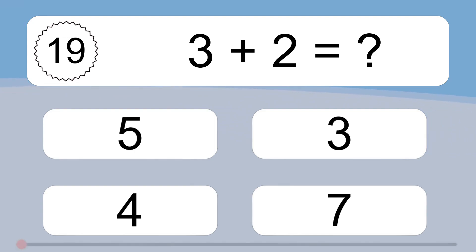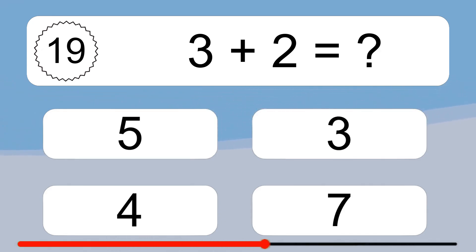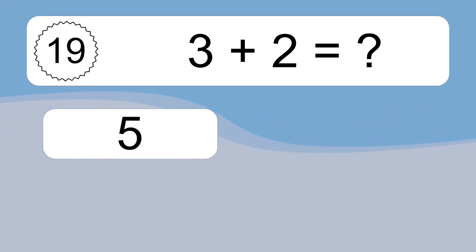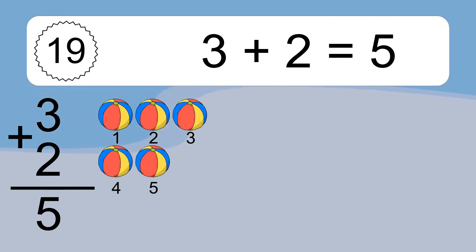3 plus 10 equals what? 3 plus 10 equals 5. Let's count it. 1, 2, 3, 4, 5.